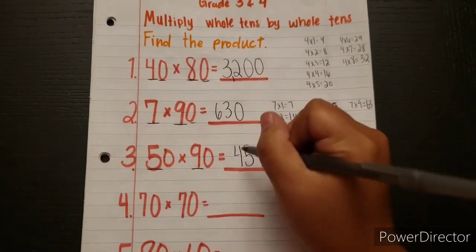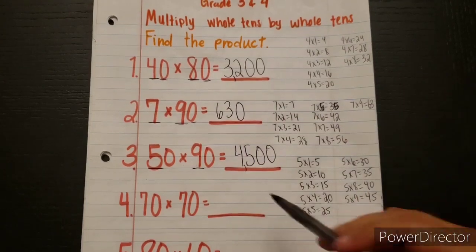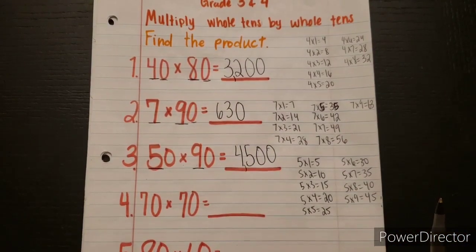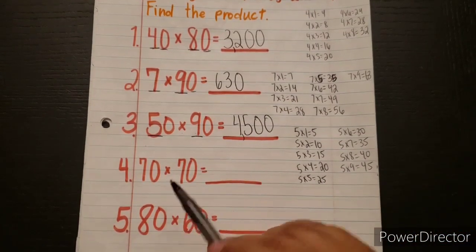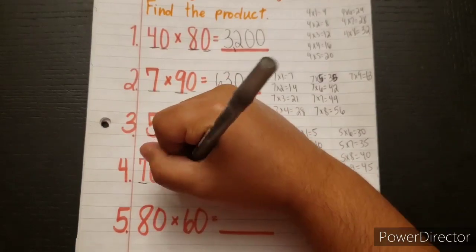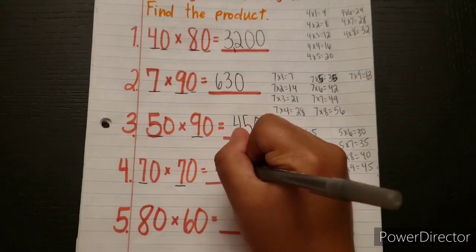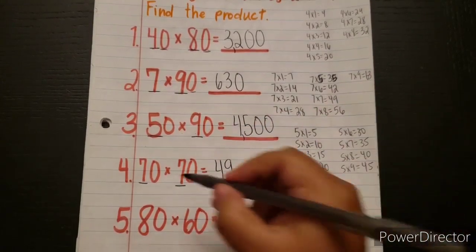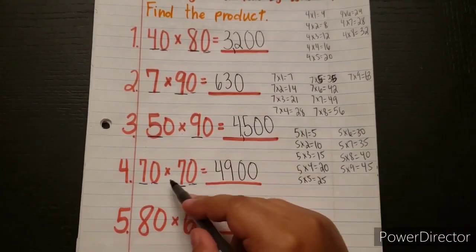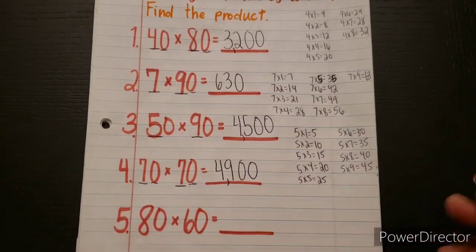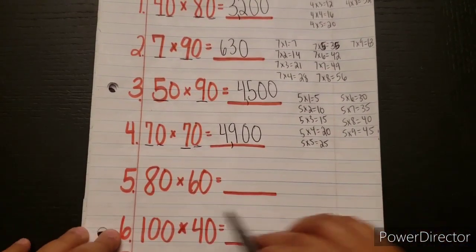Then we would just have to add these two zeros, so the answer is 4,500. Let's go on to the next one. We have 70 times 70. So what is 7 times 7? We have that right here and that is 49. So we'll go ahead and put 49, then we just add these two zeros. So 70 times 70 equals 4,900.